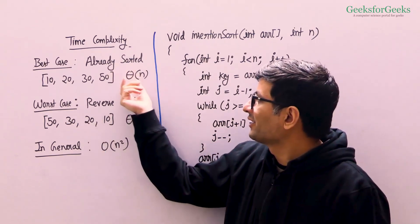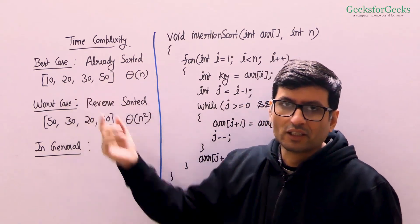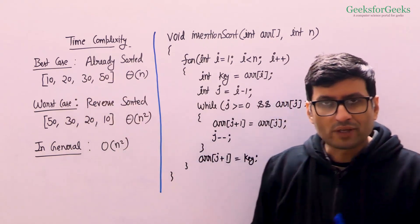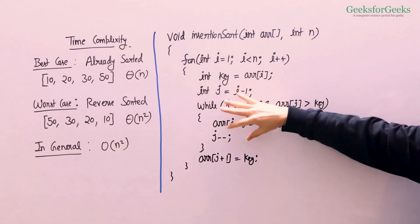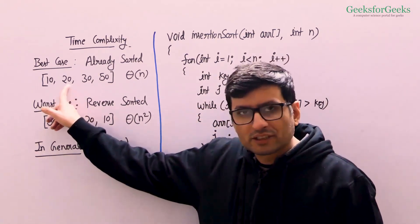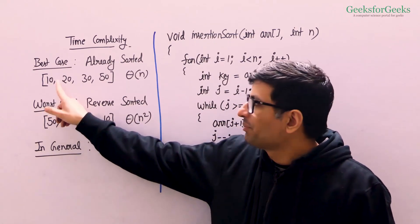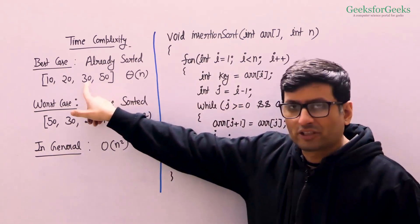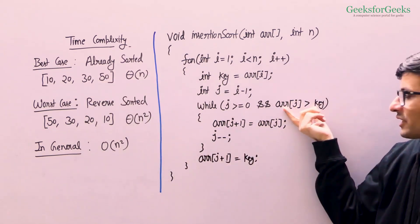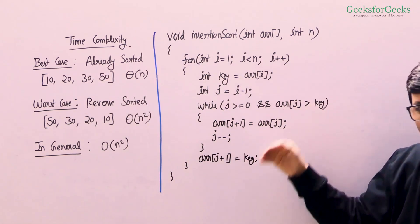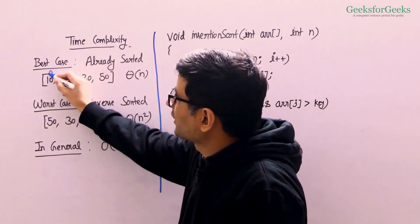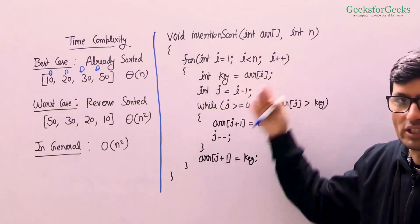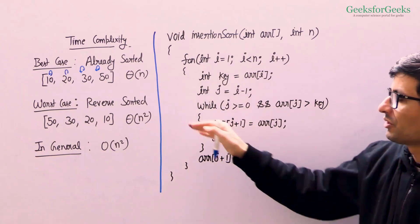The best case occurs when the input array is already sorted — for example [10, 20, 30, 50]. In a sorted array, you never go inside the inner loop. When i equals 1, the key is 20 and the previous element is smaller, so you don't enter the while loop. The same happens for 30 and 50 — the condition is never true. You simply overwrite every element with itself, which is constant work per iteration, giving a time complexity of Θ(n).